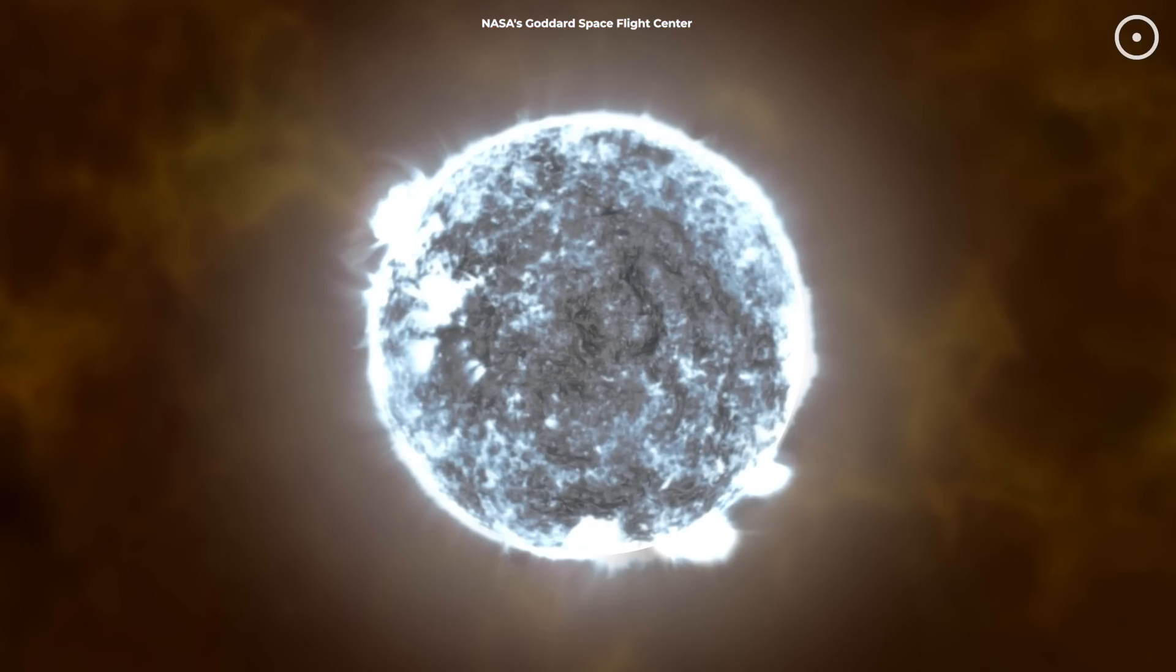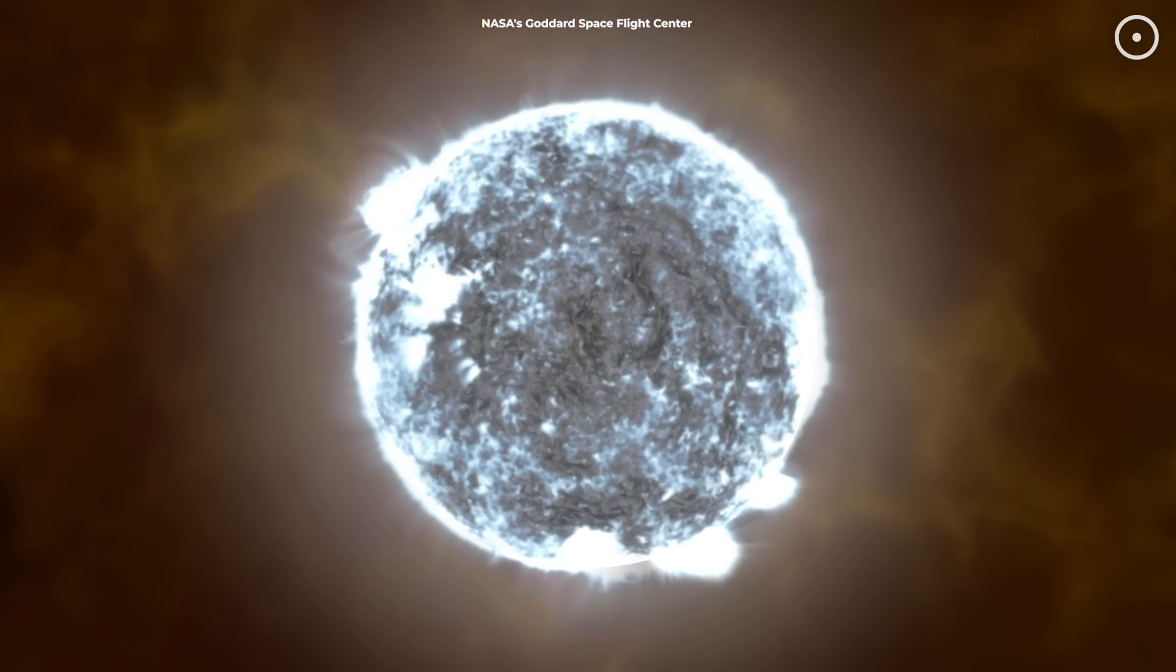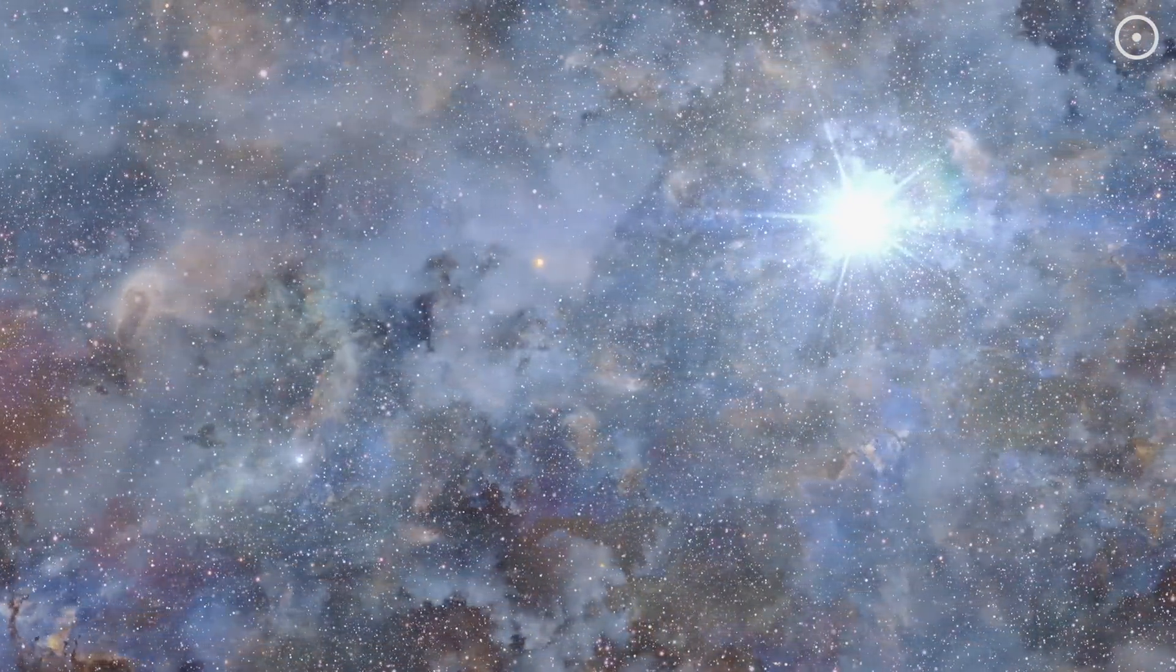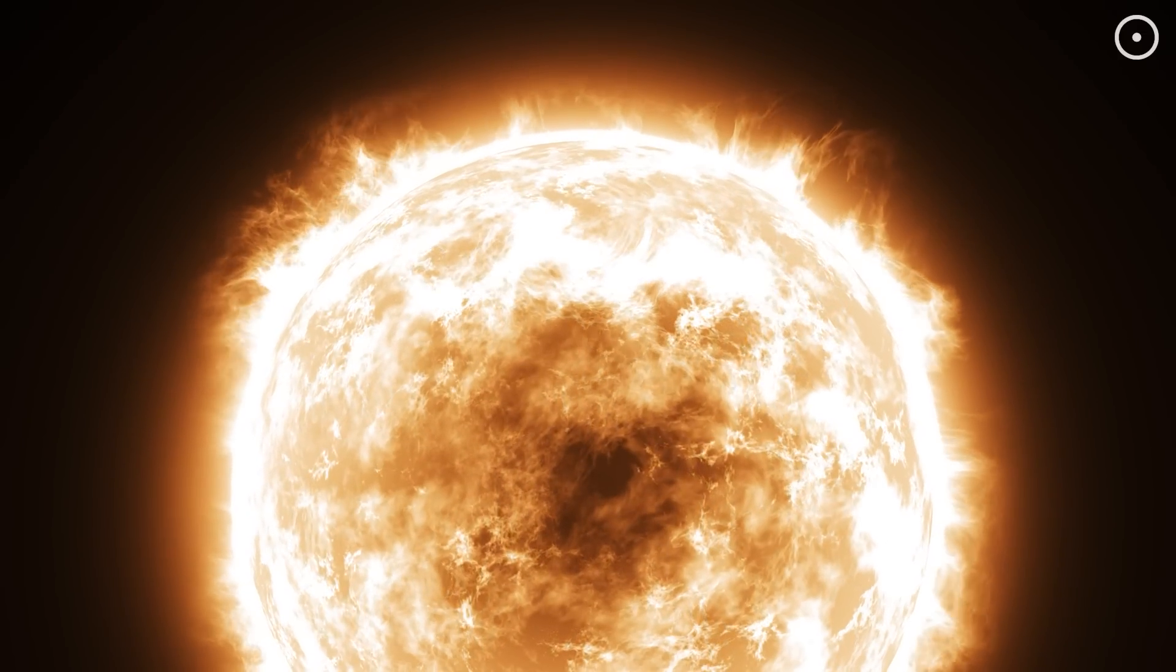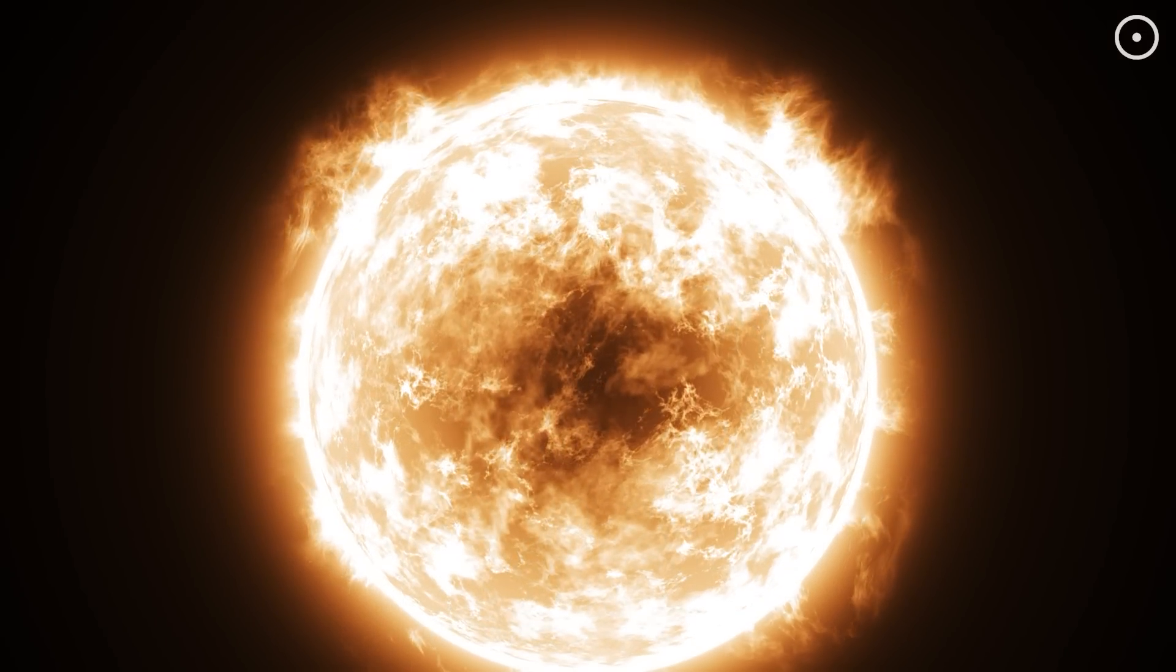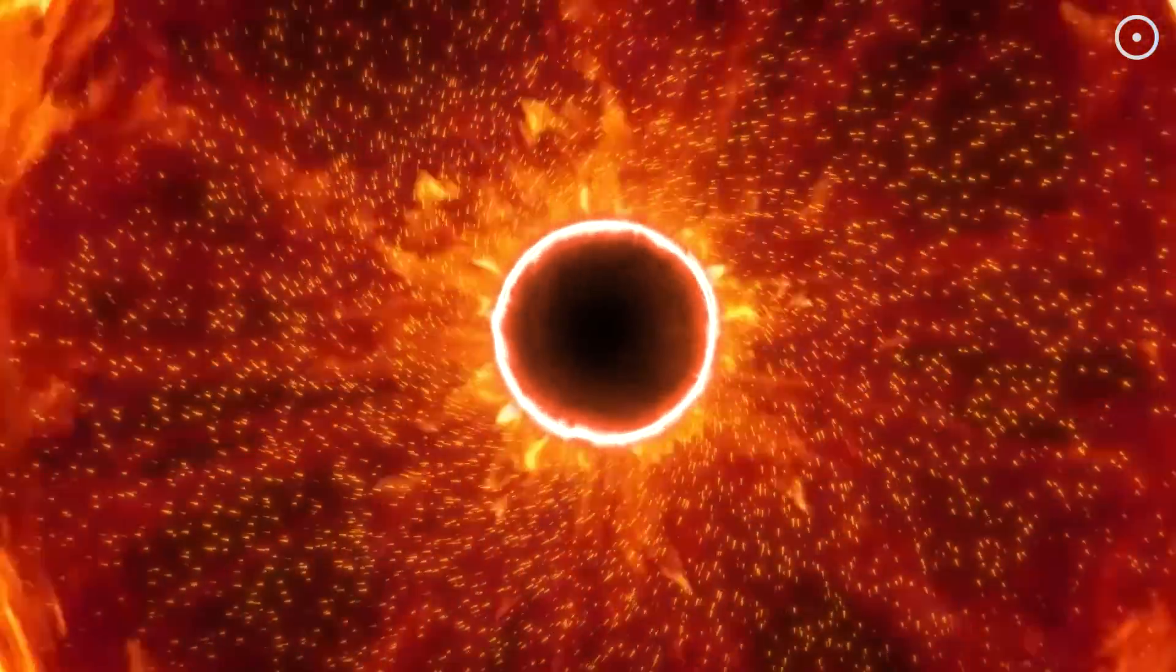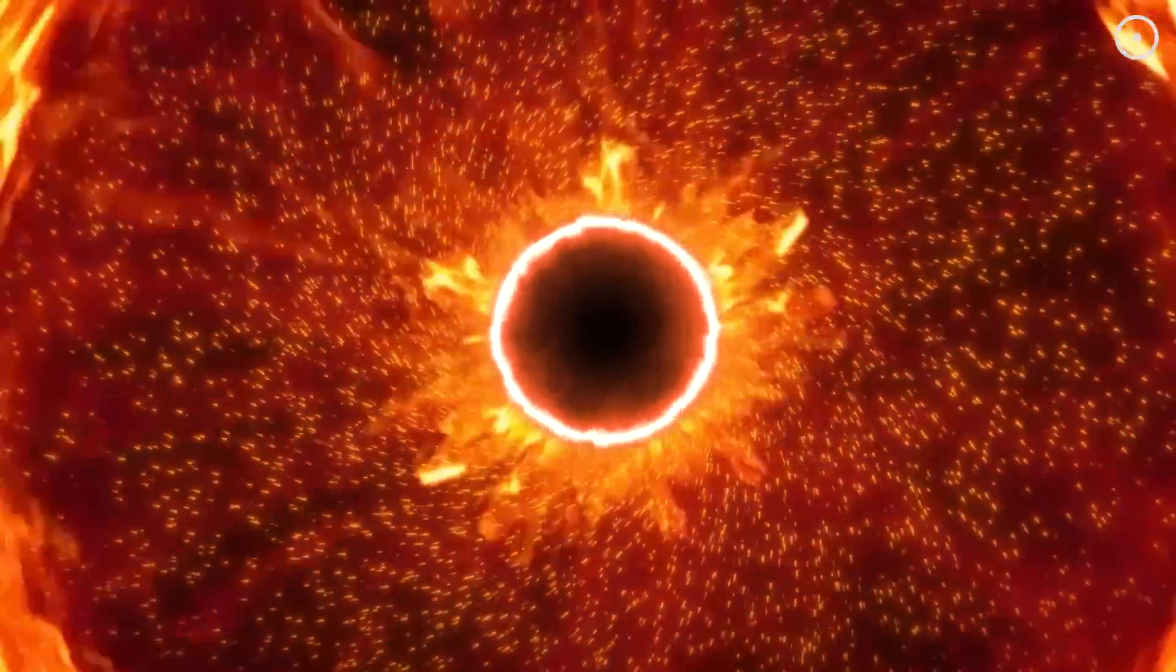As this enormous gas cloud collapses, it leads to the creation of a supermassive star. We're talking about a star up to 1,000 times the mass of our Sun, but the story doesn't end there. As the core of this supermassive star becomes denser and hotter, it eventually reaches a critical point where it can't sustain itself. The core collapses into a black hole, which is the beginning of the transformation into a quasi-star.